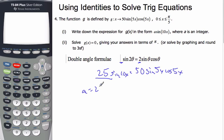And so, a equals 25, and g of x, to answer the question, is 25 sine 10x. That is part a.